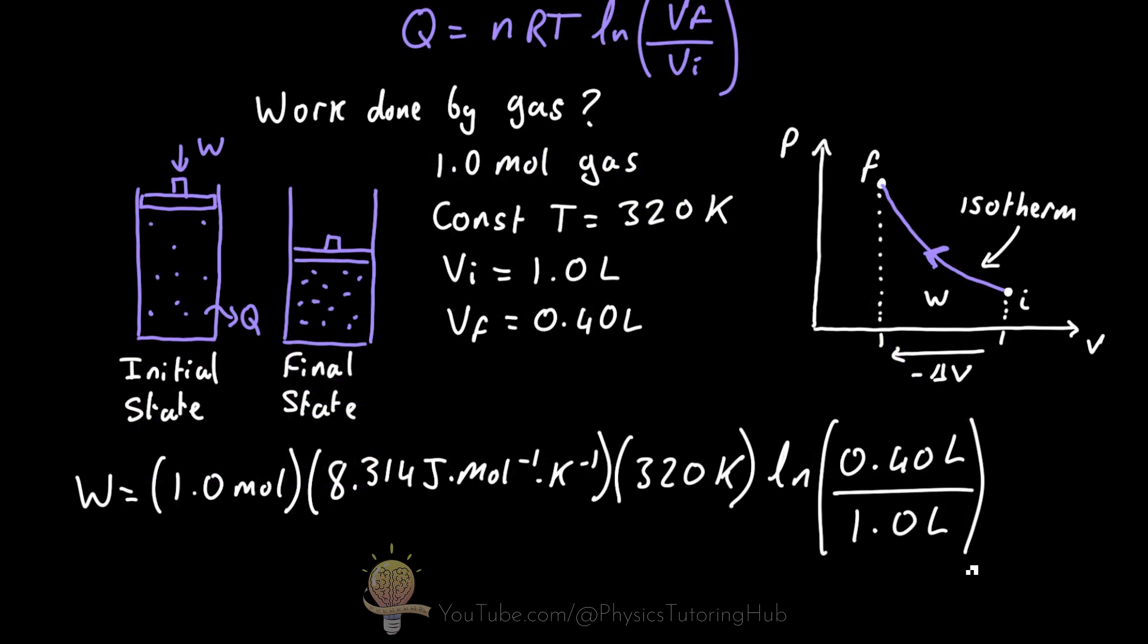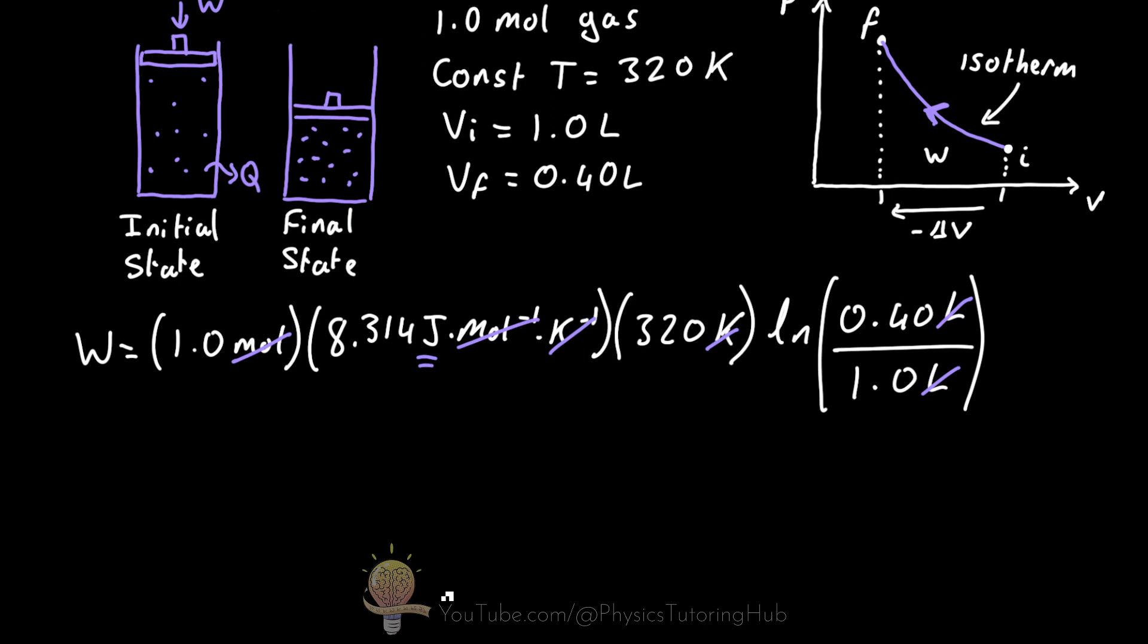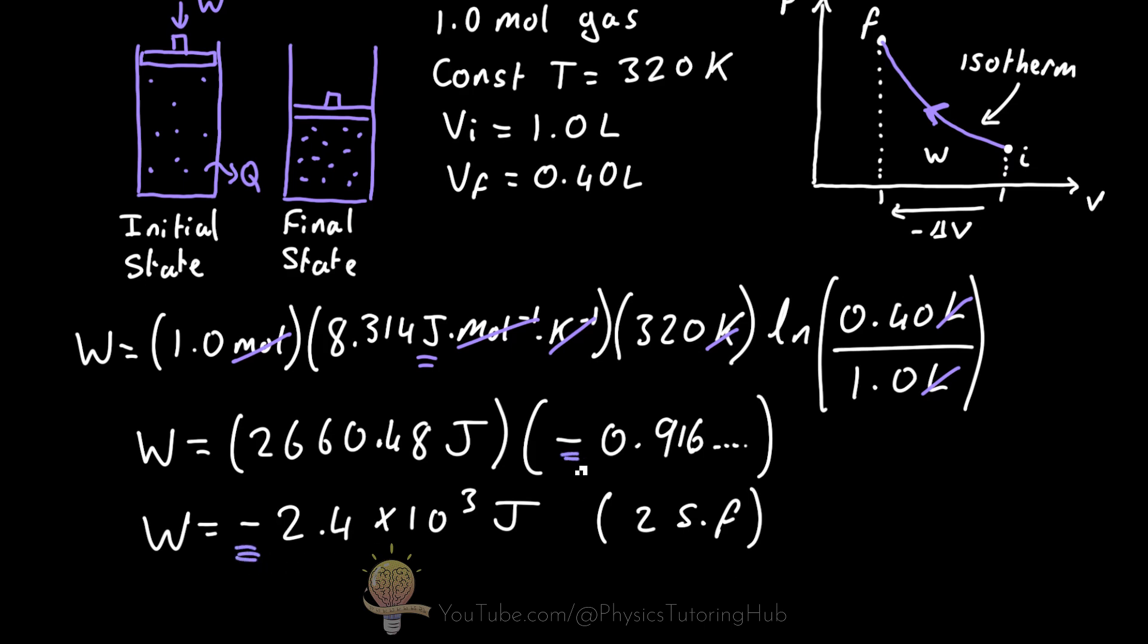Now the units for the volume of the gas do not have to be SI units here because the units cancel out in the natural logarithm. We also find that the moles of gas cancel out here as well, and so does the temperature unit. This leaves us with joules on the right hand side. So we find that the work done by the gas is equal to a negative 2400 joules to two significant figures.